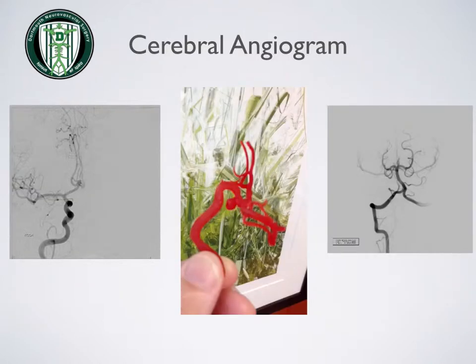On the far left is a very small aneurysm right at about the center of the screen. On the far right is a normal injection of the posterior circulation or vertebro-basilar circulation.